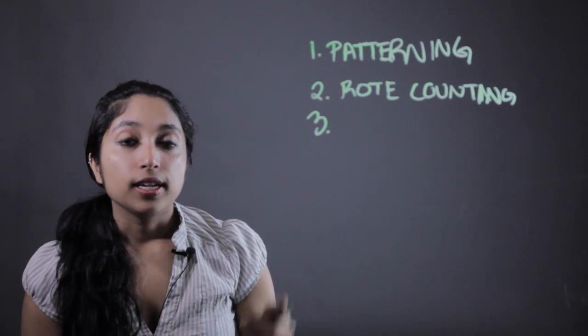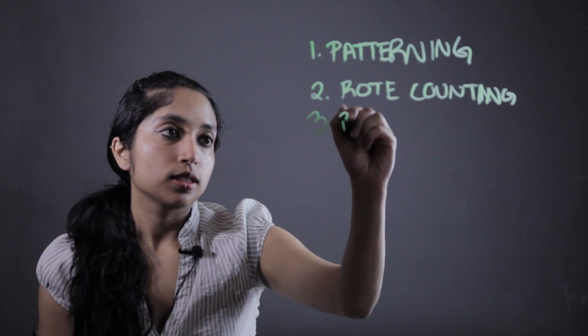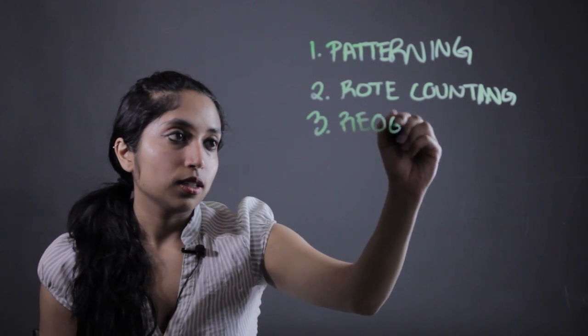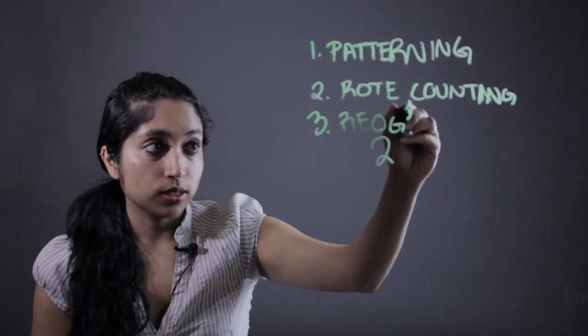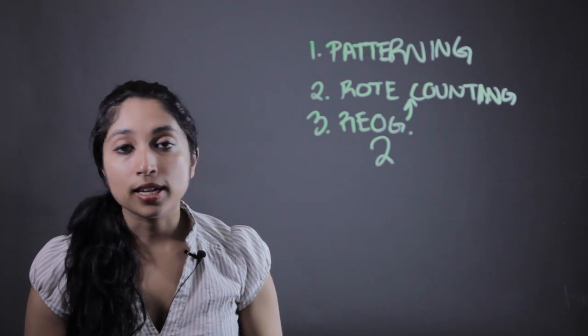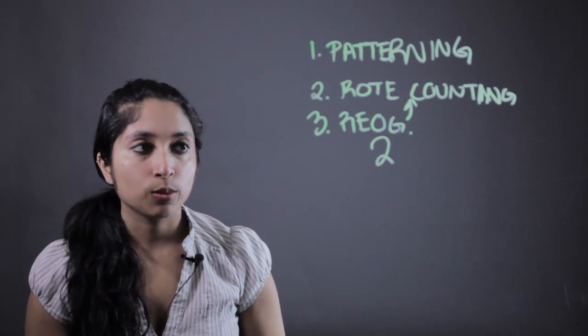Third thing that we're going to want to work on is recognizing numbers. So like recognizing that the number two is that word two that we just learned in this previous step. Recognizing what the number three is, recognizing what the number four is.